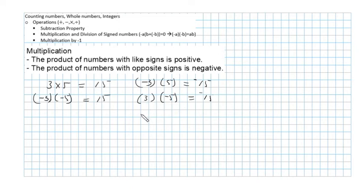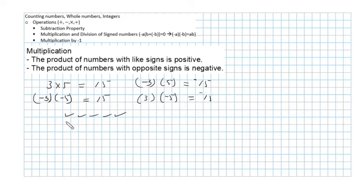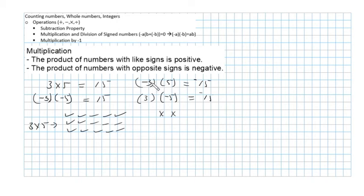Let's look at the intuition. If I have 3 times 5, I can think of it as 5 check marks added to itself 3 times, giving me 15 — straightforward. Similarly, if I have minus 3 times 5, I can think of it as 3 x's repeated 5 times, giving me 15 x's — that's minus 15.